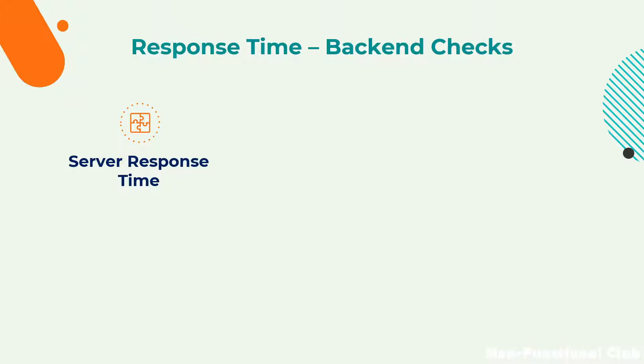When checking any particular application — for example the Amazon app — if we click on mobiles, the filter will fetch all the mobiles in the list. The server will return a certain list of mobiles to be displayed to the user. That particular server response time should be as low as possible. There are specific standards for this, which we will look into in detail in the next session. Server response time is a major aspect of back end checks.